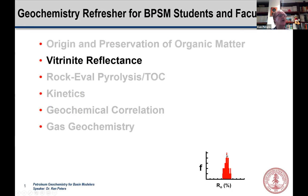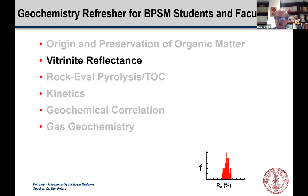Today we're going to follow up on our previous talk on origin and preservation of organic matter. We're going to talk about vitrinite reflectance. This is probably the most commonly used way of describing thermal maturity of rock samples, and it's even used in the industry to describe the maturity of fluids by means of equivalent vitrinite reflectance. It's also very important because we use it both as input and as calibration for our basin model. Many modelers don't have a working knowledge of the strengths and the pitfalls associated with vitrinite reflectance, so that's part of the purpose of this presentation.